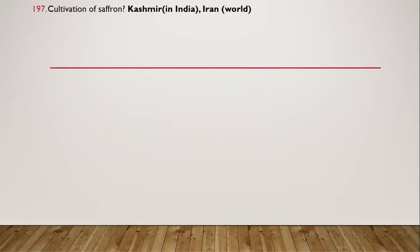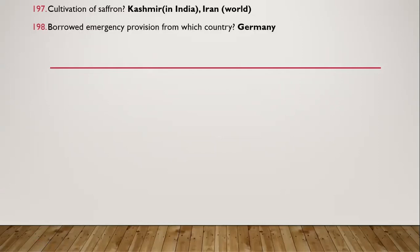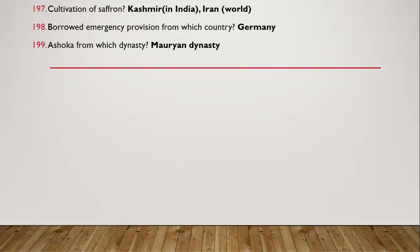Question 190: When compared in the world, the largest saffron producer is Iran. Question 191: Emergency provisions were borrowed from which country? From Germany.